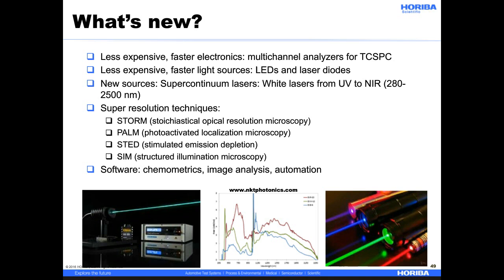New applications are pushing technology forward all the time. Less expensive and faster electronics make TCSPC measurements fast and easy. Less expensive, faster, and more powerful light sources such as LEDs, laser diodes, and supercontinuum lasers with extensive wavelength ranges push detection limits, ease of use, and flexibility as well. The latest super-resolution techniques use fluorescent spectroscopy through the microscope to break the resolution limit held for many years by classical diffraction limits. With more and more data coming through, software and analysis methodologies — including chemometrics, image analysis, and automation — are constantly improving what we can do with the data we collect.